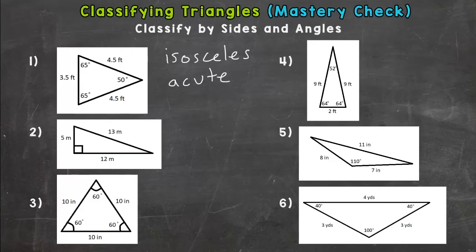Number two. As we look at the sides, none of the sides are congruent or the same. So it is considered scalene. And then we would classify this triangle by its angles as a right triangle because it has a right angle.